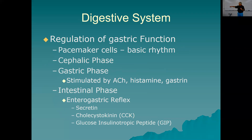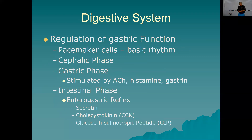Pacemaker cells set a basic rhythm of stomach function via the enteric nervous system. In the cephalic phase, higher brain centers — particularly the hypothalamus hunger center — stimulate the medulla oblongata and parasympathetic input to the digestive system. The gastric phase is stimulated by acetylcholine, the post-ganglionic parasympathetic neurotransmitter. Histamine and gastrin also turn on the gastric phase. The intestinal phase — called the enterogastric reflex — involves secretion of secretin, cholecystokinin, and GIP feeding back on the stomach to slow things down, inhibiting gastric motility and secretion.